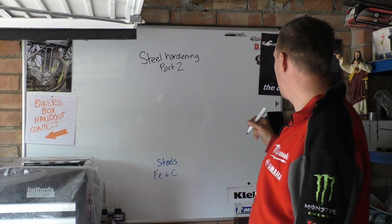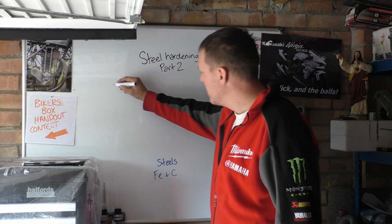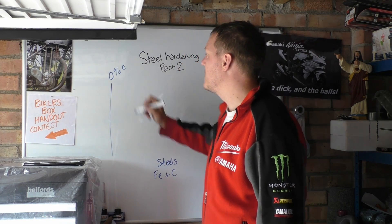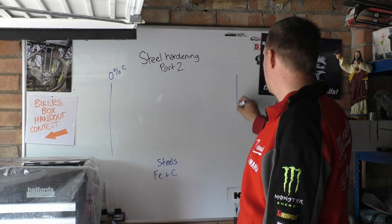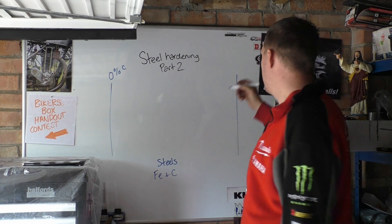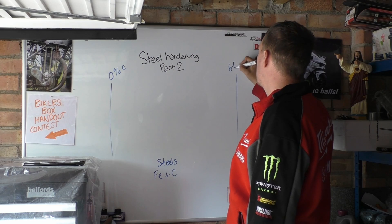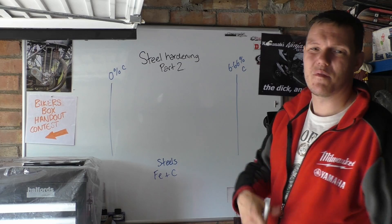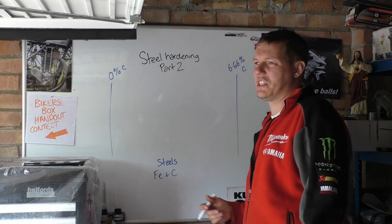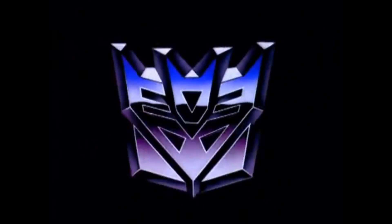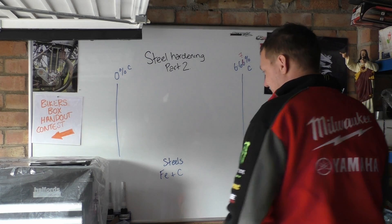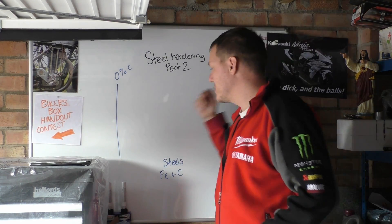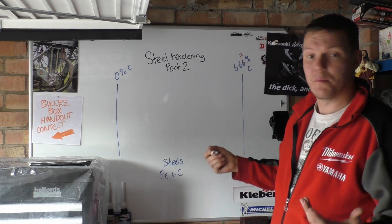Down at the lower end of the scale we have zero — zero percent carbon — and then over here, just for this example, we're going to put 6.66 percent carbon. It's 6.67, but let's just go 6.66 because it's cool. So now we have this iron-carbon diagram and you've got your percentages at the bottom.